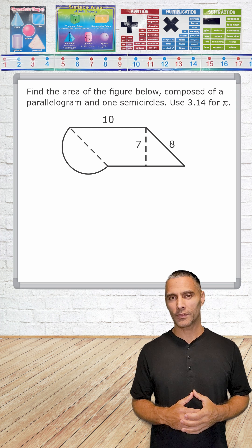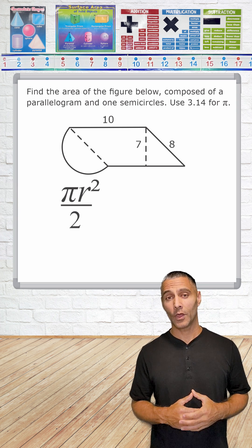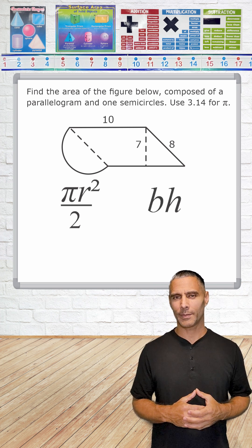The area of a semicircle is found by taking pi times radius squared and dividing by 2. The formula to find the area of any parallelogram is base times height. Alright, let's start with the semicircle.